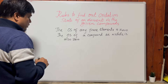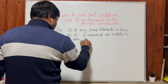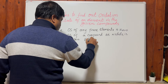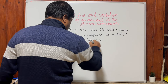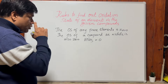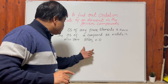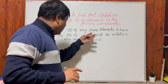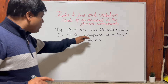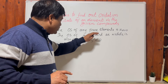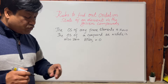The oxidation state of a compound as a whole is also zero. For example, HNO3 — nitric acid — the whole compound has no overall formal charge, so it is zero. I'm not talking about the individual elements, but the whole compound overall.